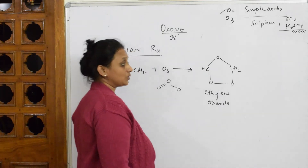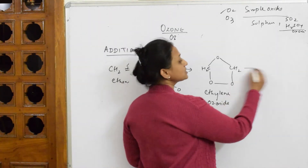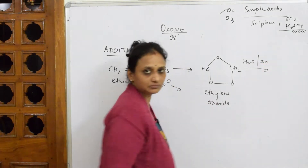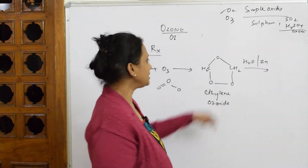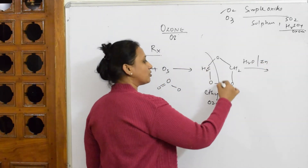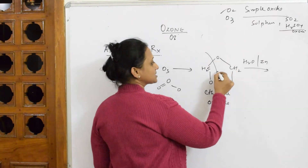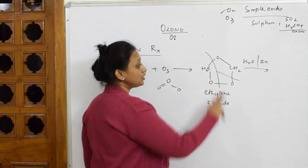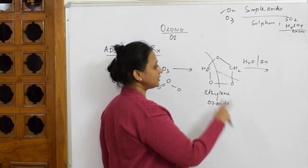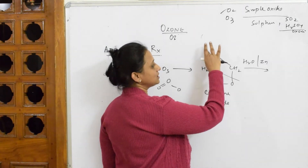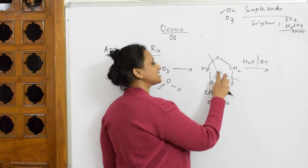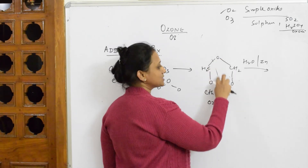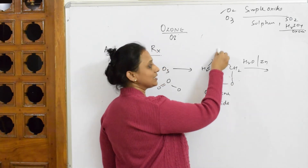Now, when you treat the ethylene ozonoid with a reducing agent in the presence of water and zinc, there is a cleavage of the bond. It's a symmetrical cleavage. Let me put my pen here and cleave it in the center so you will not get confused.